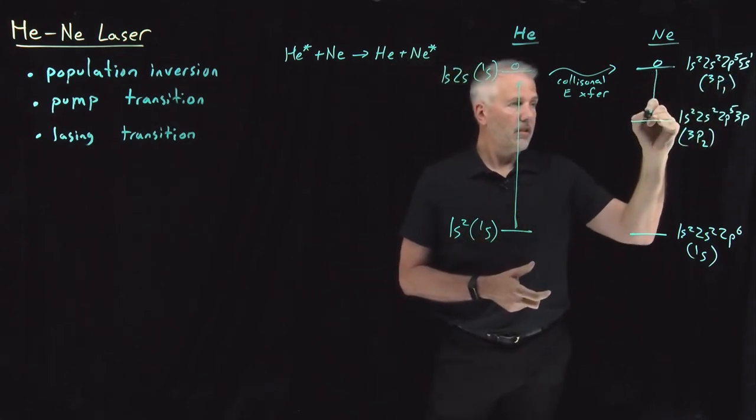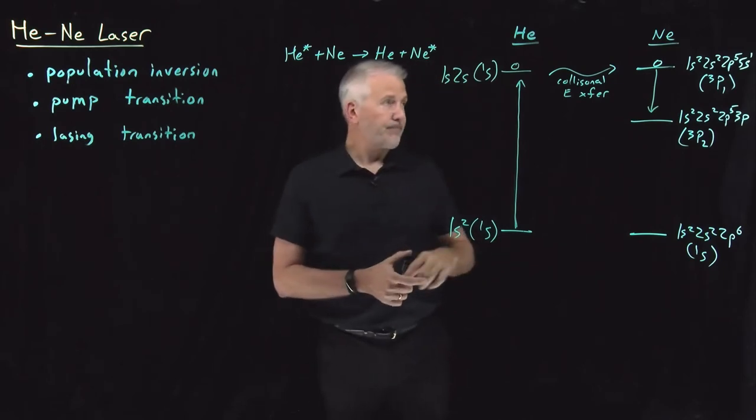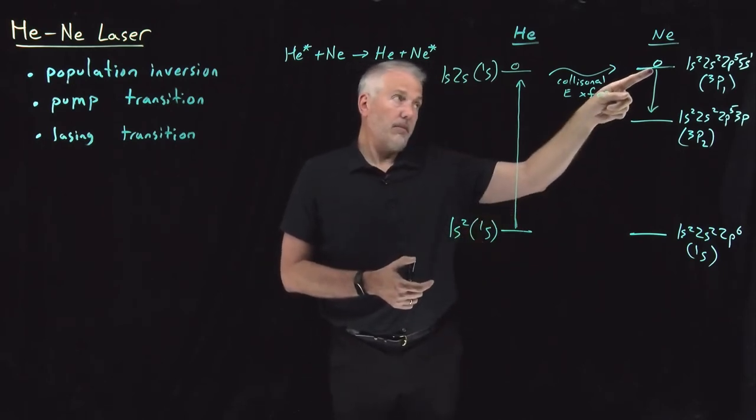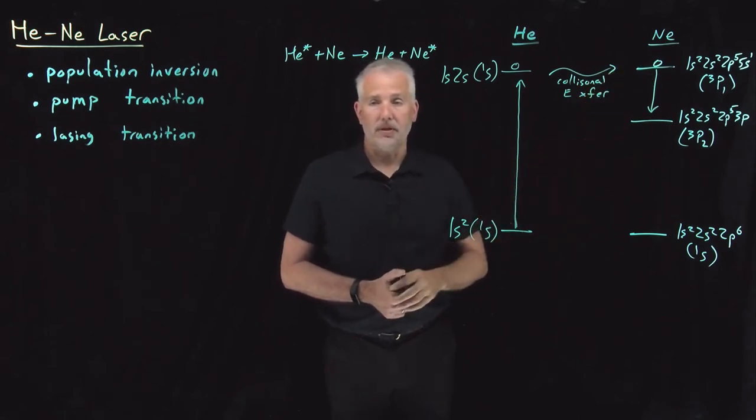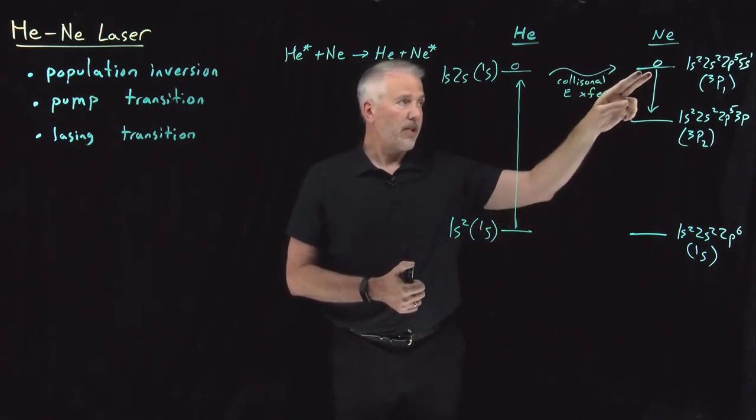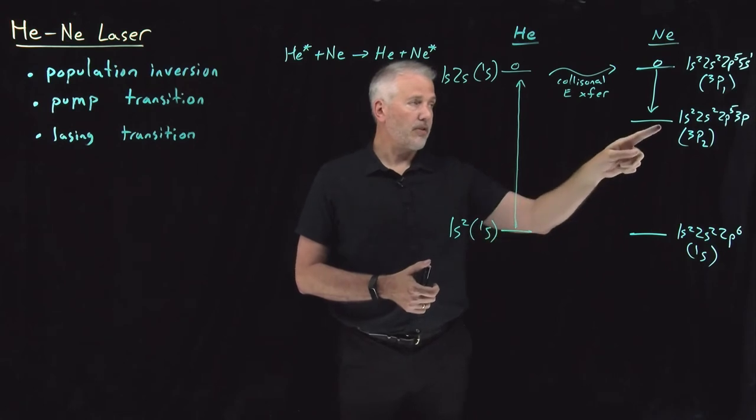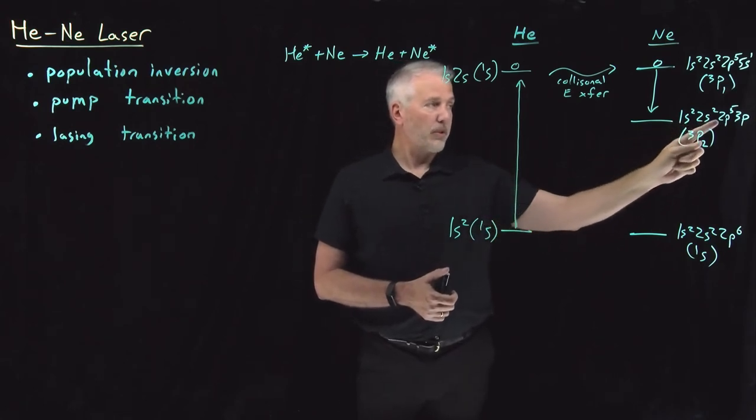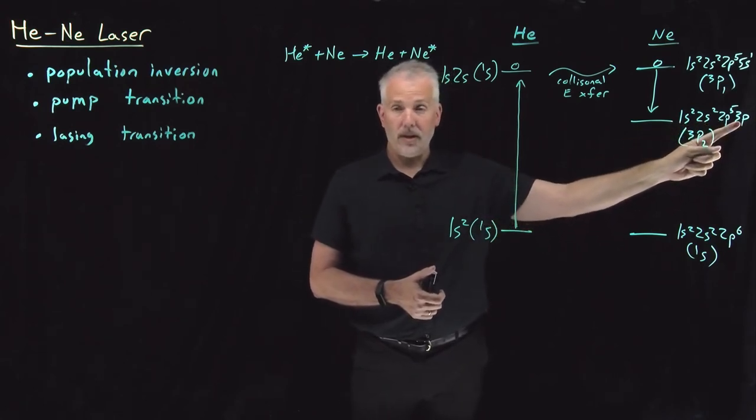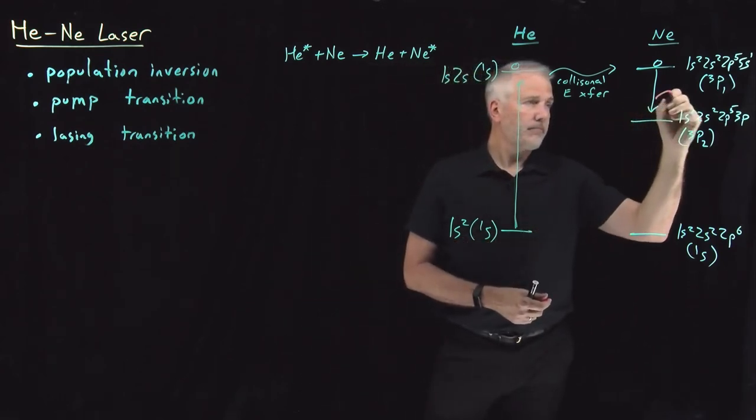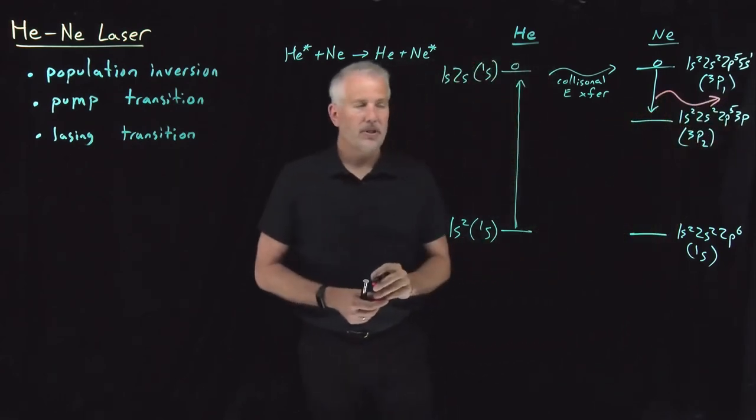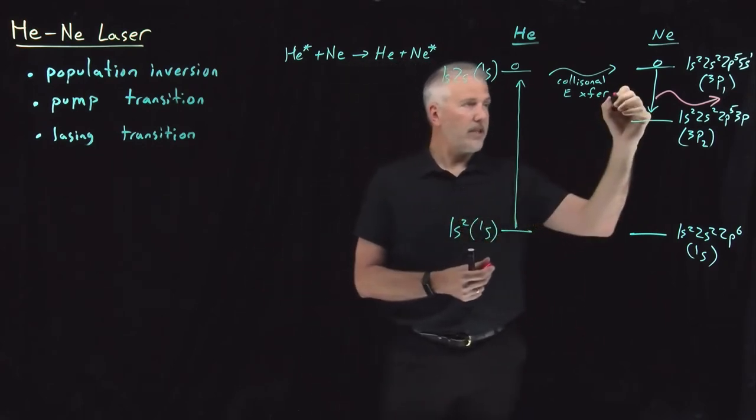So this emission, this excited neon will fall down spontaneously to one of any number of states in this neon atom. But if it happens to fall down to this particular 1s2, 2s2, 2p5, 3p1 state, then it will give off a photon. That particular photon, this is our lasing transition.